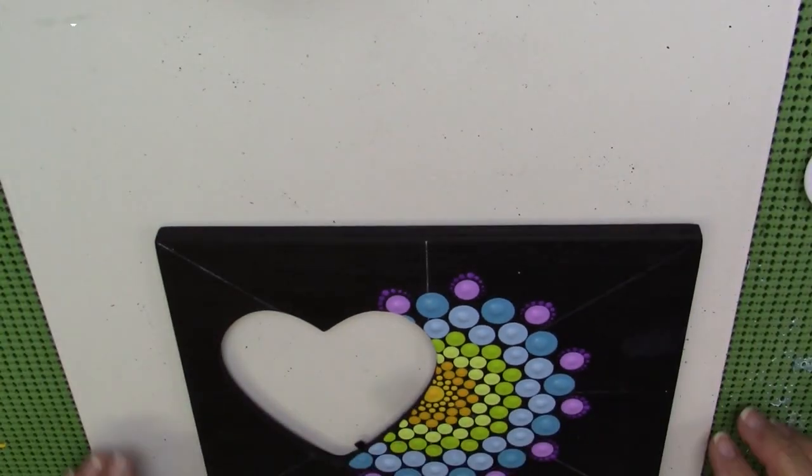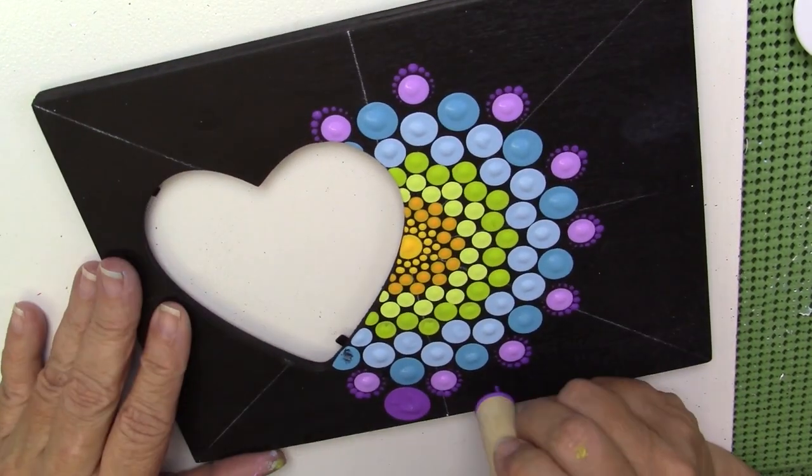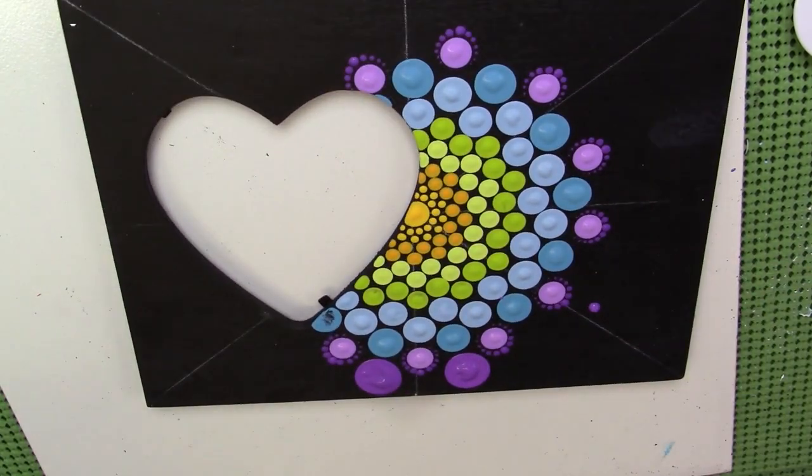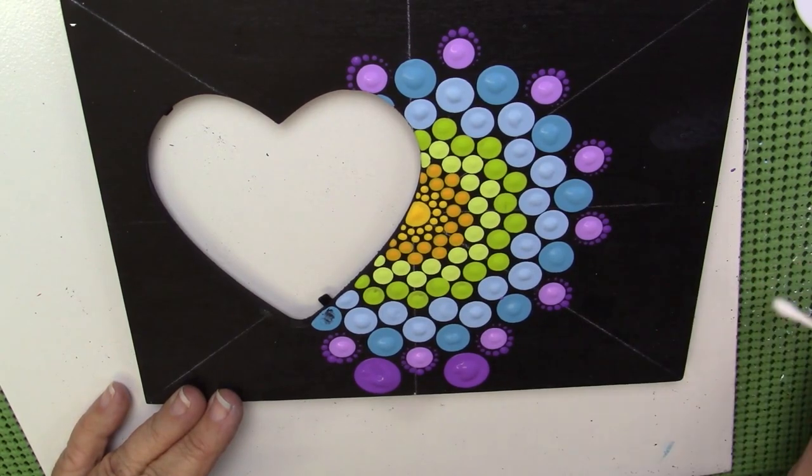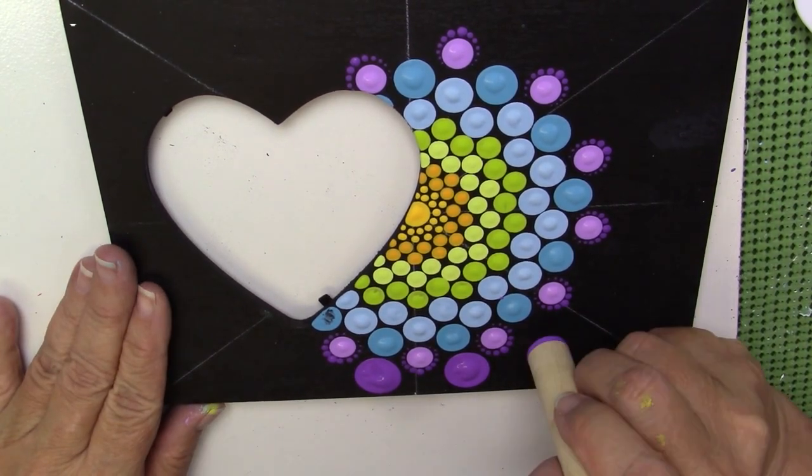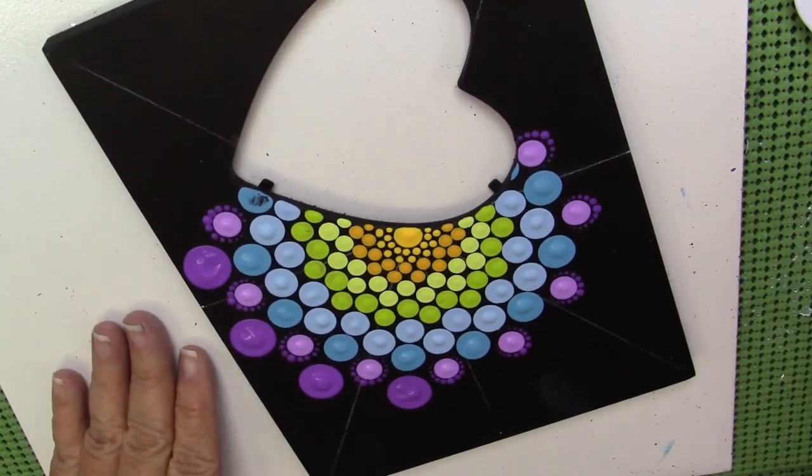And I'm going in with my 5/8 inch dowel and the purple pizzazz and just adding that row of the larger dots. If you drip any paint or anything, just use your Q-tip to roll it off and then finish brushing that off and let it dry. And then I'll go all the way around with this dowel.